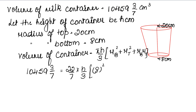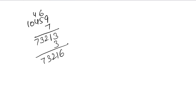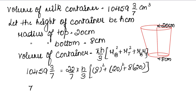Radius of base = 8, तो 8² = 64; top = 20, तो 20² = 400; plus 8 × 20 = 160। इसको fraction में change करते हैं — 10459 और 3/7 को fraction में: 10459 × 7 + 3 = 73216/7। यह equals 22h/21 × (64 + 400 + 160)। तीनों add करके 624 आता है।